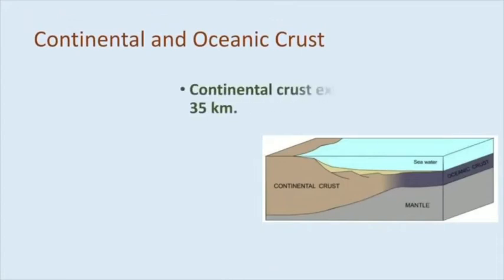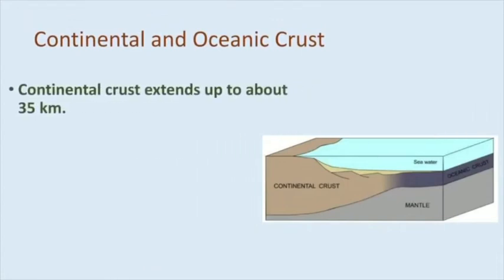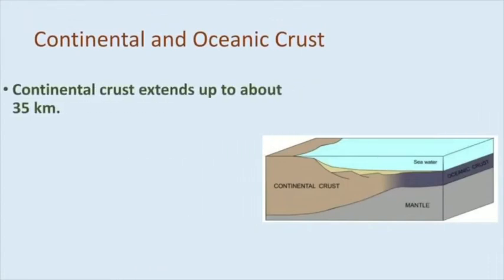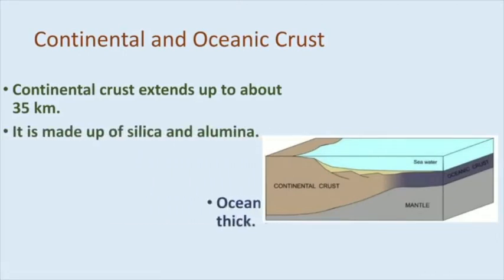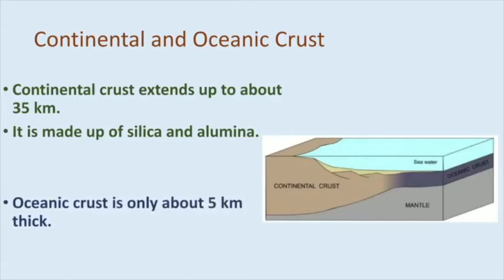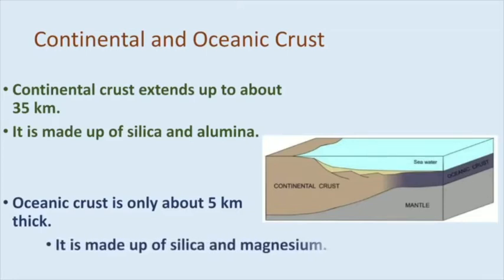Continental crust extends about 35 kilometers below the continental masses and it is made up of silica and alumina. Whereas oceanic crust is only about 5 kilometers below the ocean floors and made up of silica and magnesium.